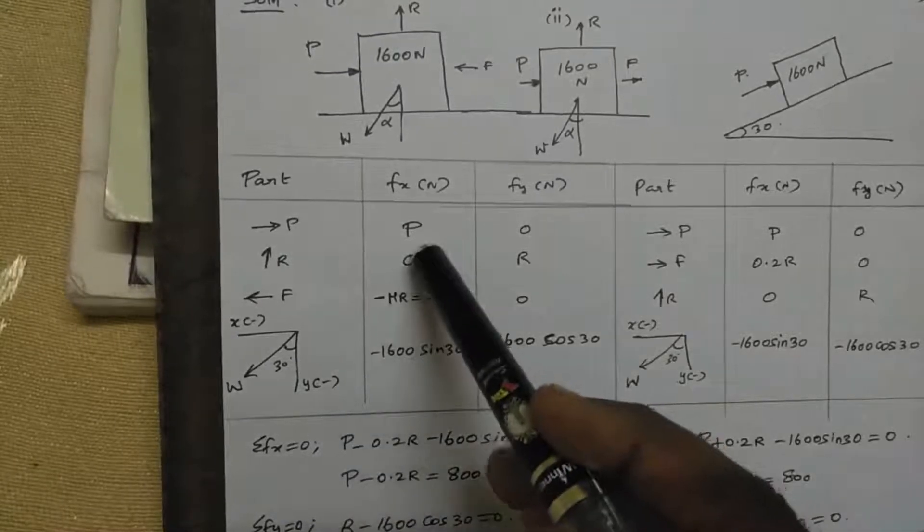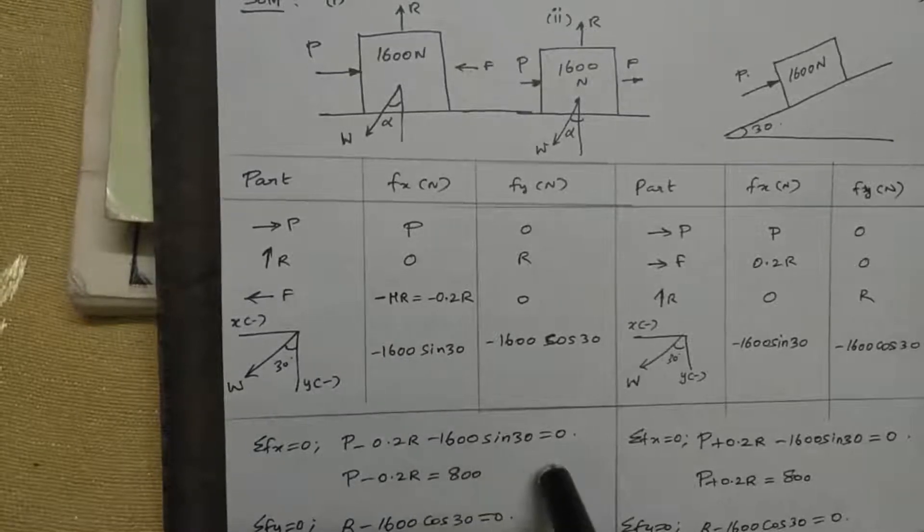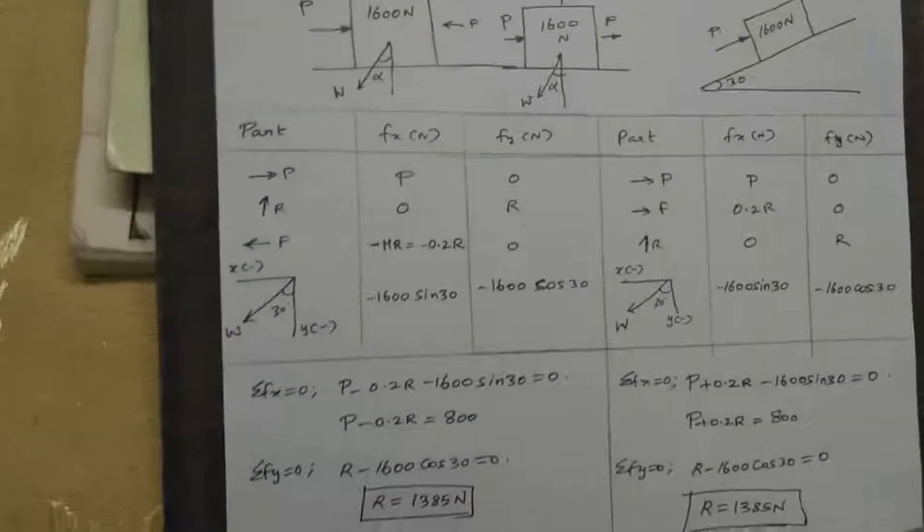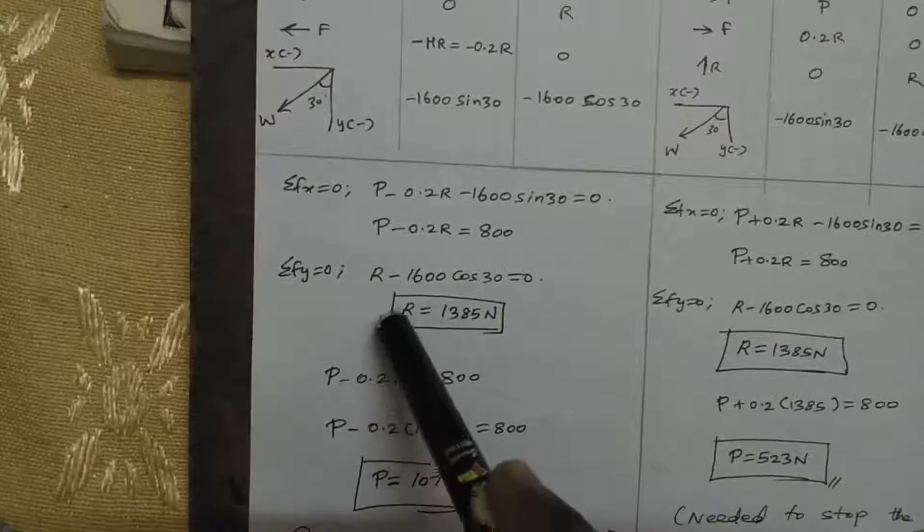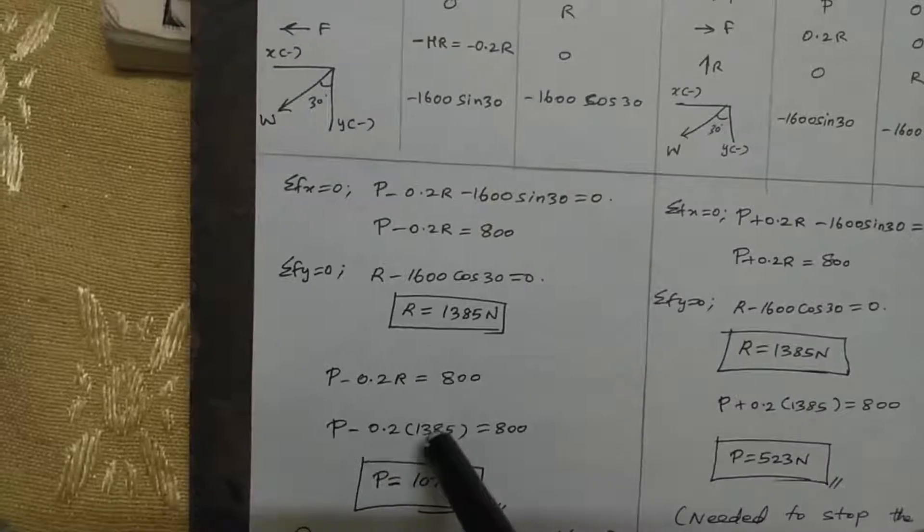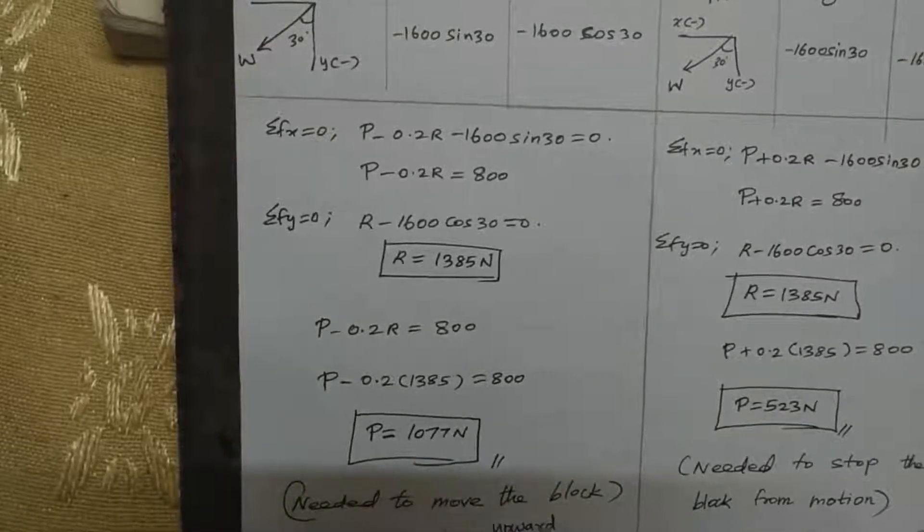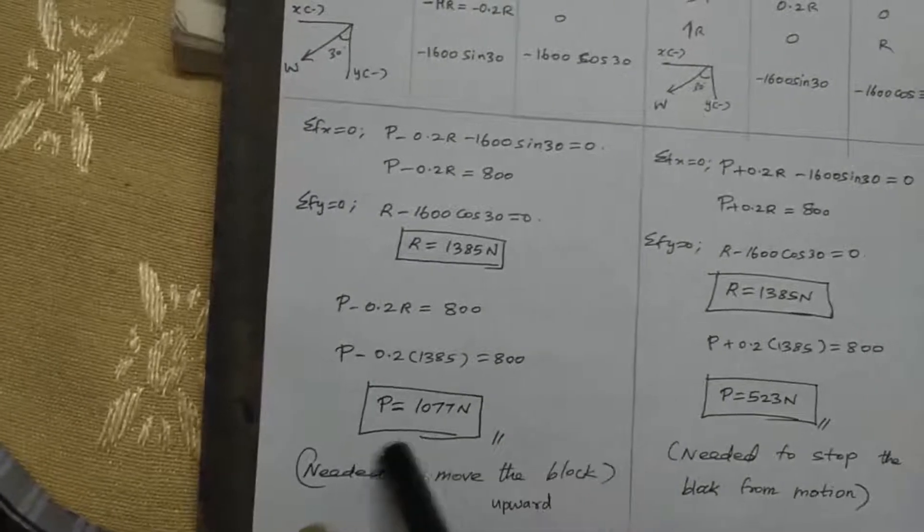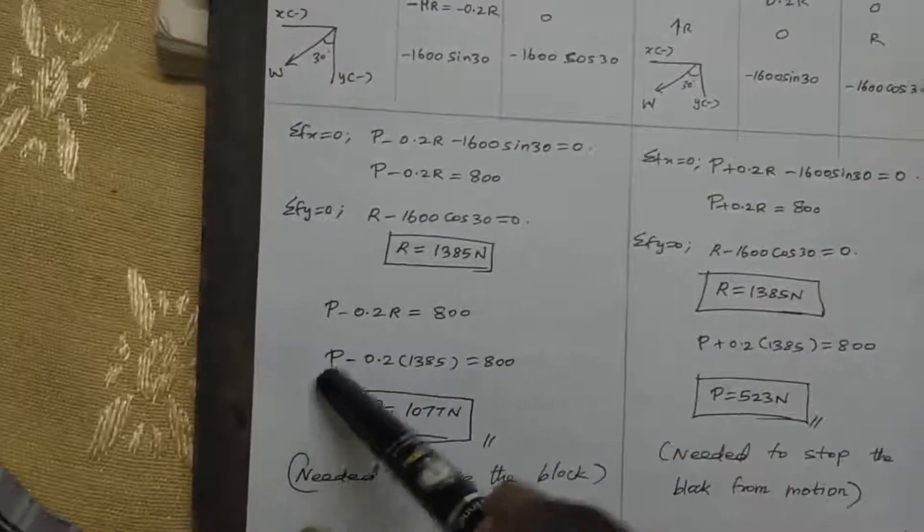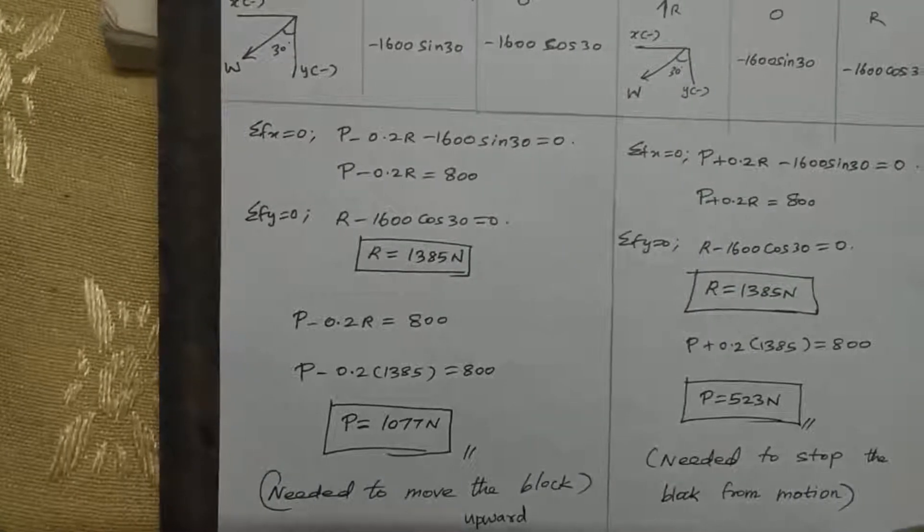F of x is equal to capital P minus 0.2R minus 1600 sin theta. 1600 sin theta value is 800. The value of 1600 cos theta is 1385. So the capital P will be equal to 1077 Newton. To move the block upward, we have to apply a load of 1077 Newton.